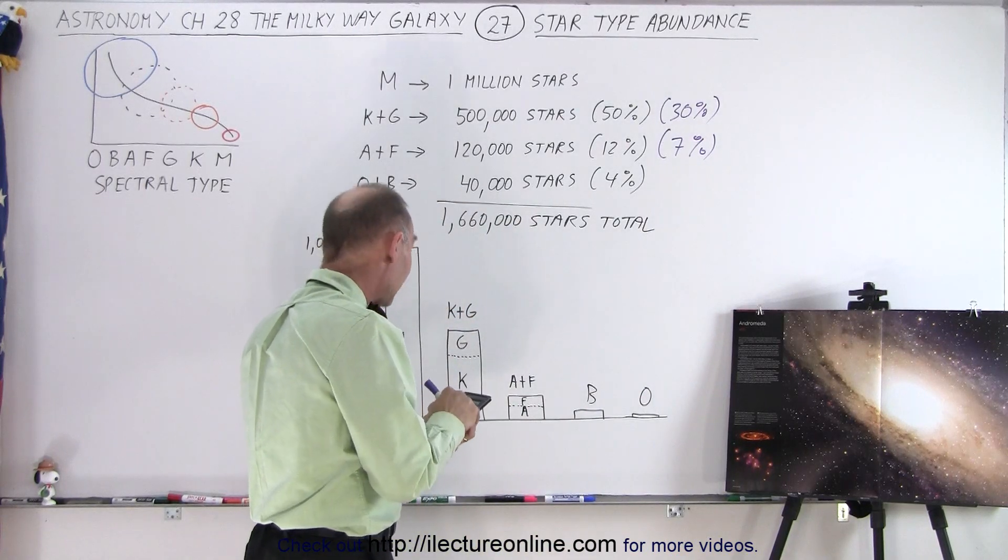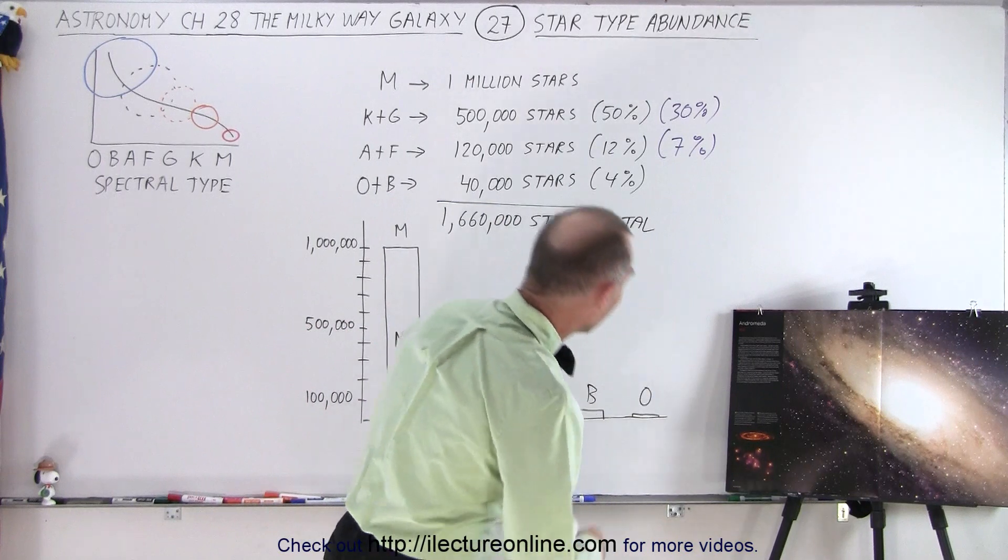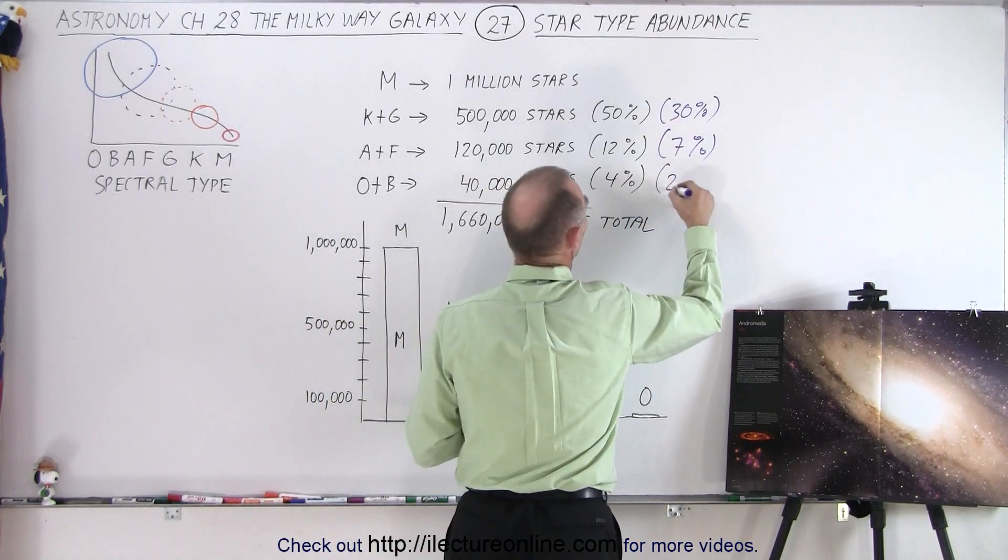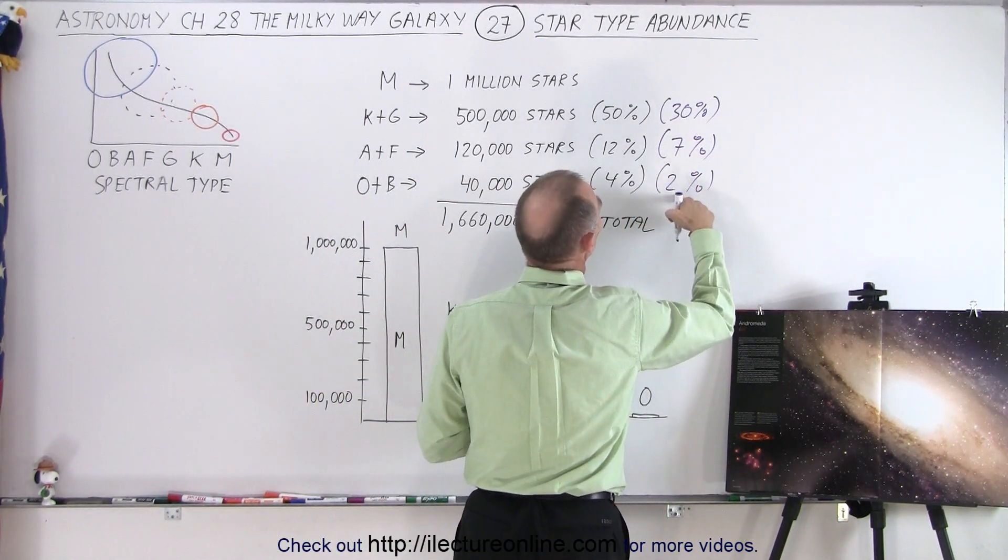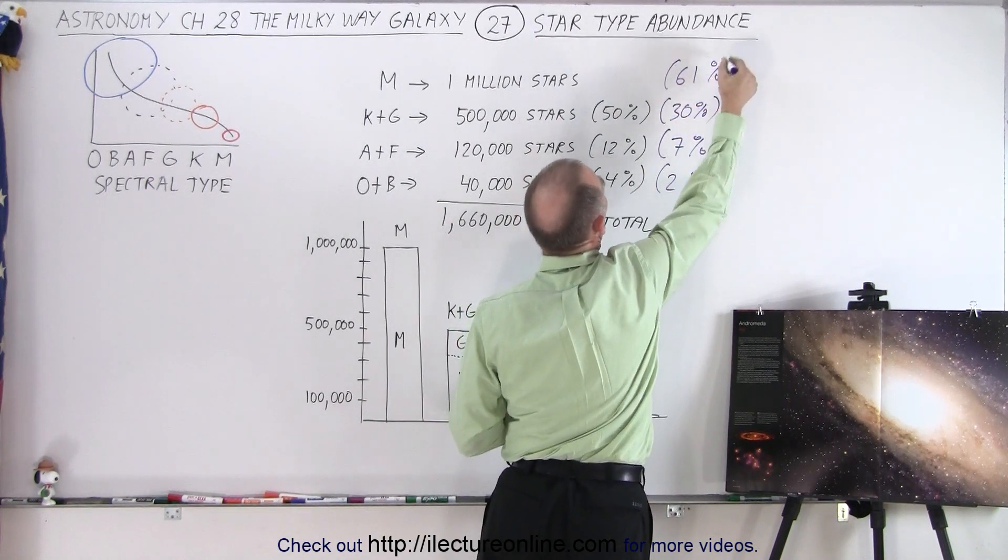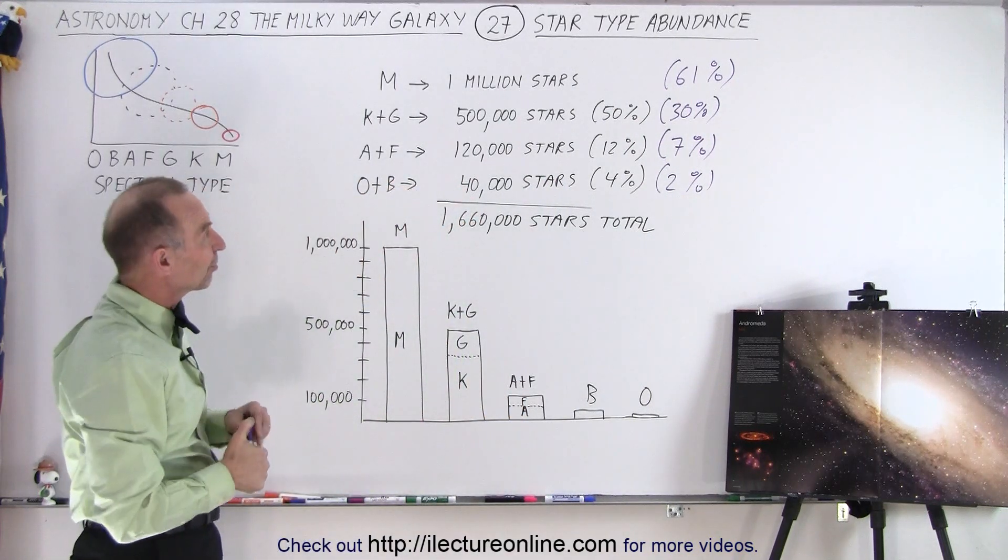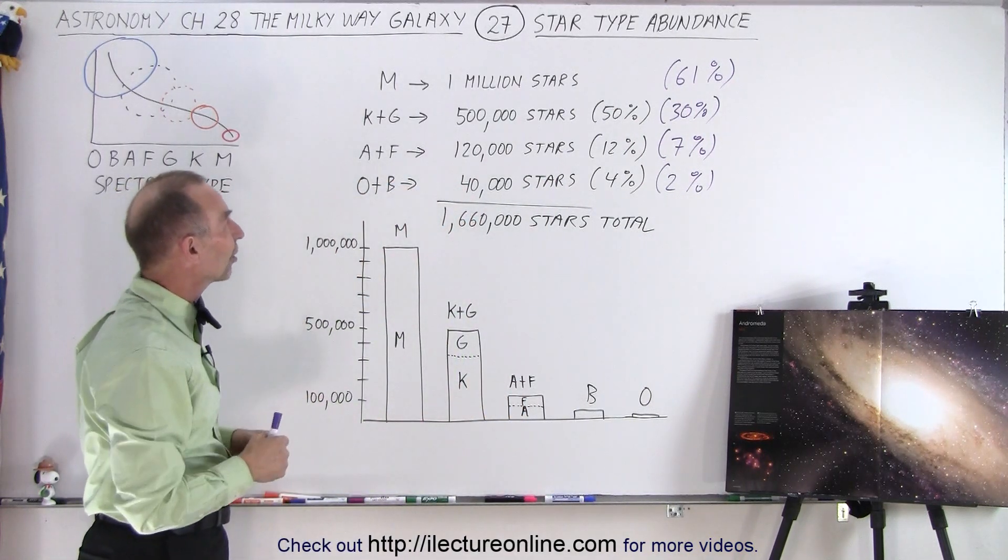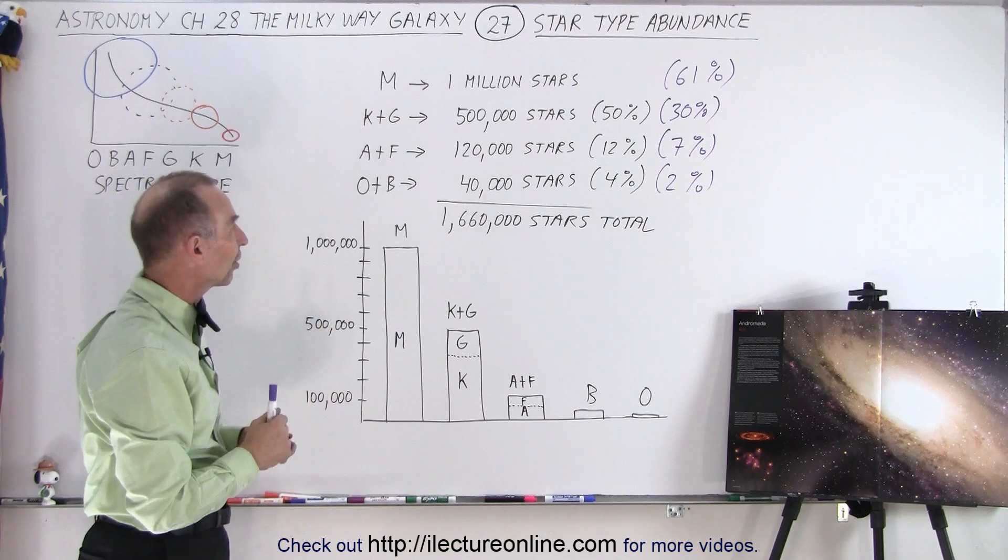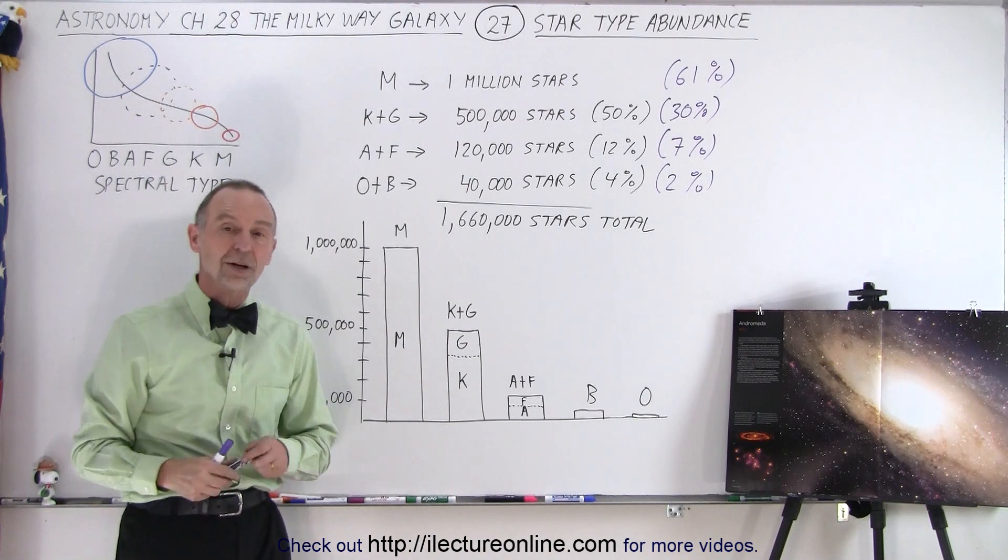And 40,000 divided by 1,660, that would be about 2.4%. So about 2, let's say just 2% of those, that gives you 39. So 61% would be those types of stars. So it's basically it. So about 61% of all the stars are M-type stars, 30% are K- and G-type stars, 7% are A- and F-stars, and about 2% of all the stars are O- and B-type stars.